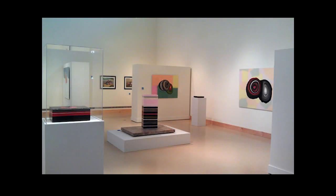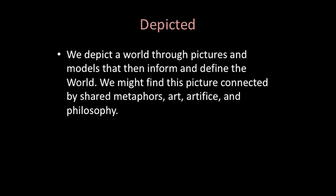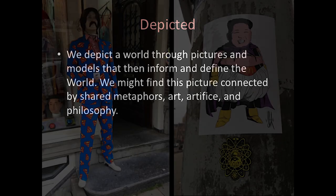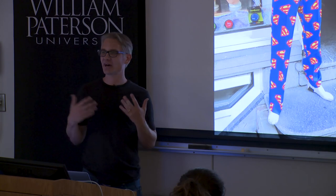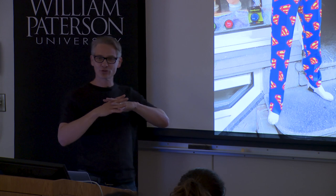Here are examples of the work installed in a museum — shiny and plasticky. Now, 'depicted': we depict a world through pictures and models that inform and define the world, connected by shared metaphors, art, artifice, and philosophy. How do we depict the people who run our world or who are important to us? How do those representations intermingle? Some of this documentation is from Paris, some from Amsterdam — hunting down and locating interesting cross-cultural relationships.